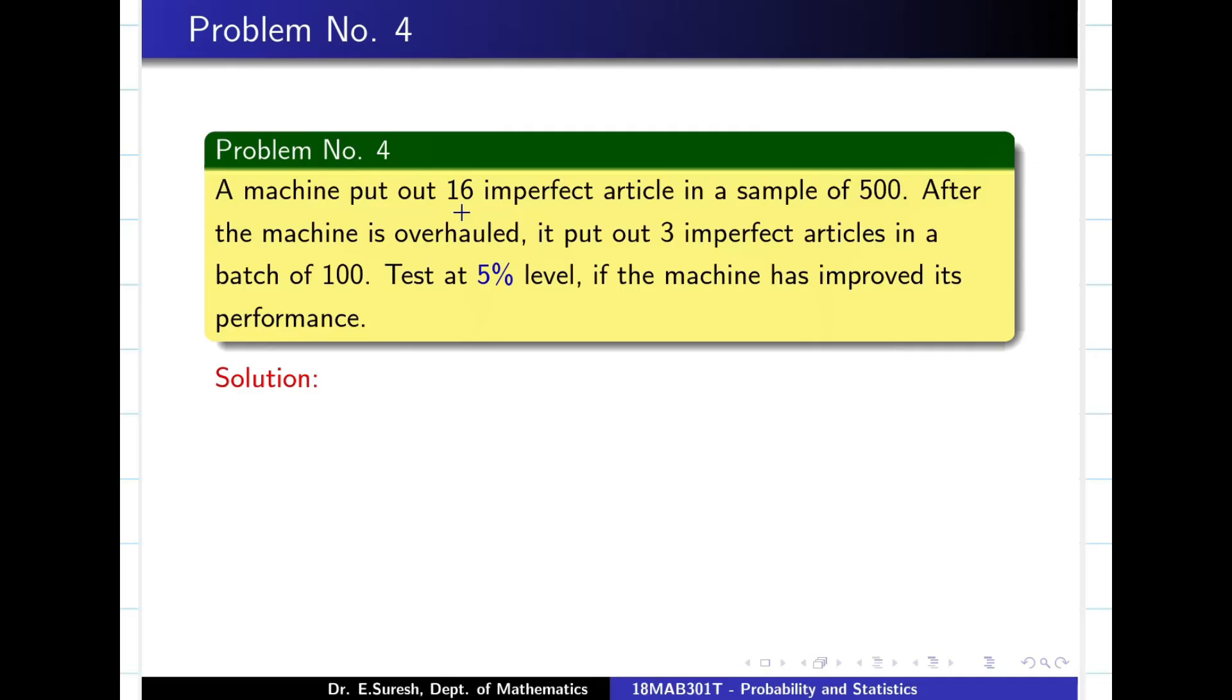Now there is a machine, it is producing 500 samples, so N is 500. It is going to be large sample. Out of 500, 16 are imperfect, so there are 16 imperfect articles, so obviously it is going to be proportion. Now to check whether it is single proportion or difference of proportion. So 16 is imperfect, so they are dealing with defective data.